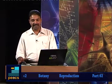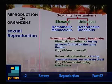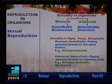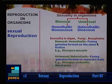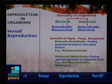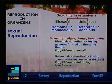Sexuality in organisms divides them into two categories: bisexual and unisexual. Bisexual is also called homothalic; unisexual is called heterothalic. In algae, fungi, and bryophytes, organisms may be either bisexual or unisexual. In bisexual (homothalic) organisms, the fusing gametes are formed on the same plant or on the same thallus — example: Rhizopus sexualis. In unisexual (heterothalic) organisms, the fusing gametes are formed from separate thalli or separate strains.